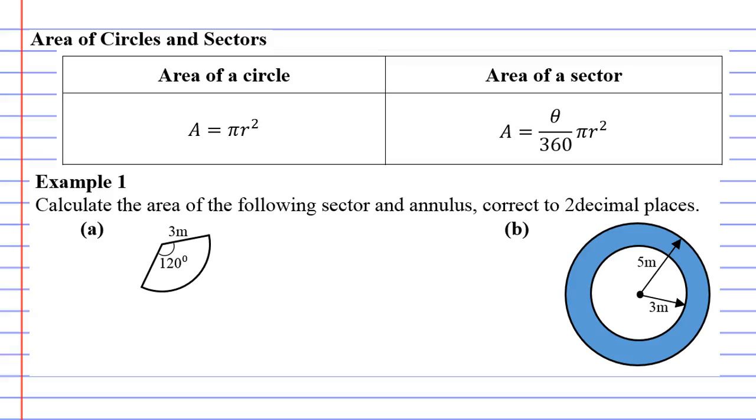Area of circles and sectors. I've given you the two formulas, which have been discussed in earlier chapters, so we're going to get right into the example. It wants us to calculate the area of the following sector and annulus. The annulus is this shape here, and they want you to do it correct to two decimal places.